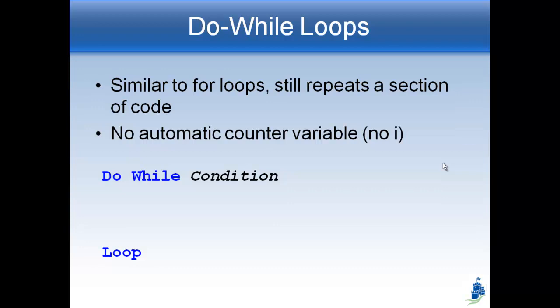The way the do-while loop works is you say do-while and then you have a condition, which is a lot like an if statement. And then at the bottom you write the word loop. Inside you can put whatever code you want — whatever stuff you want to go again and again. So we say do-while something is true. For example, you could say do-while a variable is greater than 10, do-while this variable is an integer, do-while textbox1.text equals 7 or is less than 7. You can put whatever condition you want, just like you would in an if statement. That will continue to loop this code as long as that condition is true.